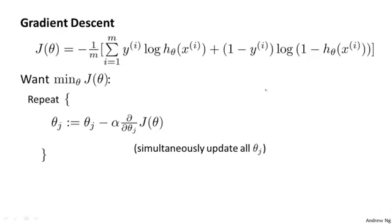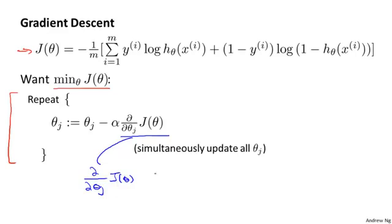The way we're going to minimize the cost function is using gradient descent. Here's our cost function. And if we want to minimize it as a function of theta, here's our usual template for gradient descent, where we repeatedly update each parameter by updating it as itself minus the learning rate alpha times this derivative term. If you know some calculus, feel free to take this term and try to compute the derivative yourself and see if you can simplify it to the same answer that I get. But even if you don't know calculus, don't worry about it.